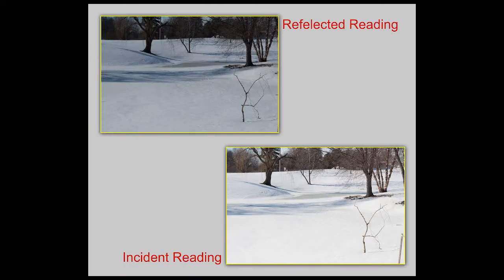We can apply that same principle to subjects in other places — for example, outside in the snow. We want snow to be white, but your camera's meter wants that snow to be middle gray. If you have something that's directly lit and evenly illuminated in a variety of tones, a reflective reading works just fine. But for something like snow, the incident reading is mandatory.